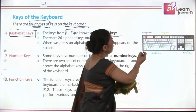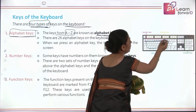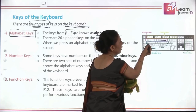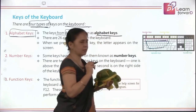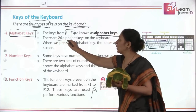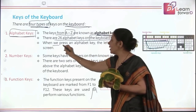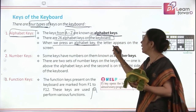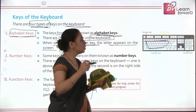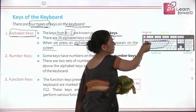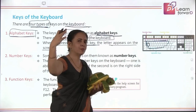I will show you here on the keyboard. Could you see these alphabets? These are called alphabet keys. We have Q, W, E, R — all 26 alphabets are here. When you press any alphabet key, the letter appears on the screen, on the monitor. So when you press A on the keyboard, it goes and displays on the screen.